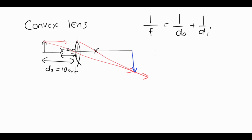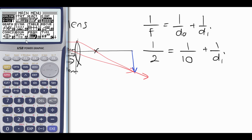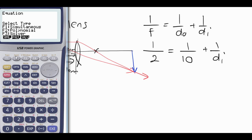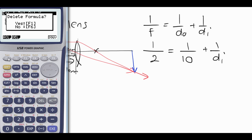So that means that 1 divided by 2 equals 1 over do, 10, plus 1 over di. Do some rearranging or chuck it into solver. So running into solver here, just get rid of the old one. 1 over 2 is equal to 1 over 10 plus 1 over x.